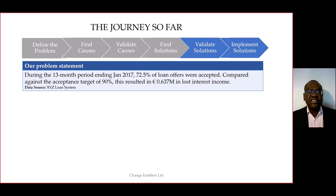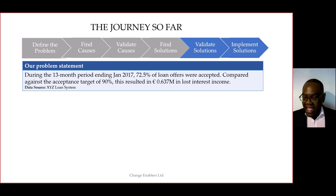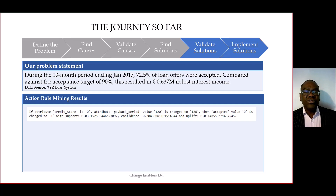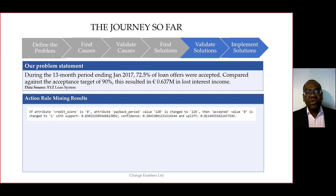The problem we're focusing on is lower than expected acceptance rates, and we discovered a number of action rules from our data, which when followed would change the outcome from an undesirable to a desirable one. In other words, it would change the outcome from the customer declining the offer to accepting it.